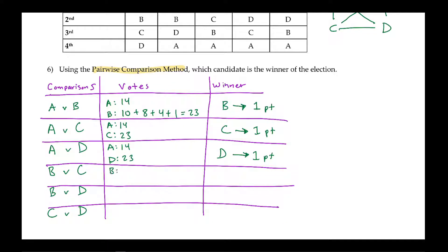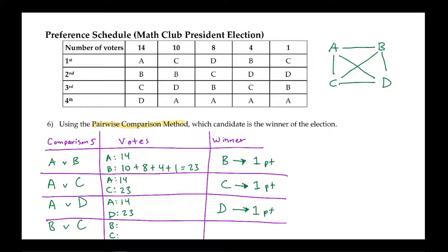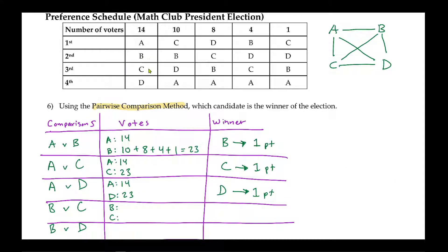For the matchup between Bob and Cora: in the first pile, Bob beats out Cora, so Bob gets 14 points. In the second pile, Cora beats out Bob — Cora gets 10 points. In the third pile, Cora beats out Bob again — Cora gets 8 points. In the fourth pile, Bob beats out Cora — Bob gets 4 points. In the last pile, Cora beats out Bob — Cora gets 1 point. Totaling up: Bob gets 18 points and Cora gets 19 points. So Cora wins this match and gets 1 point.